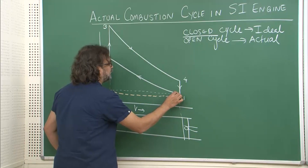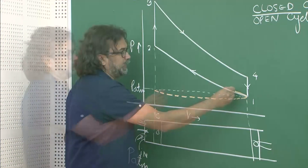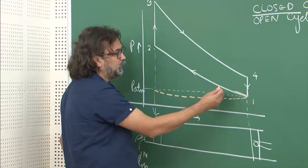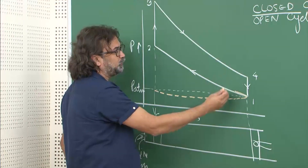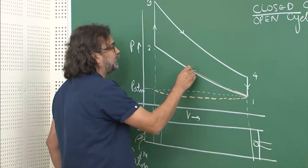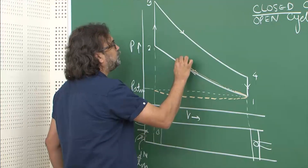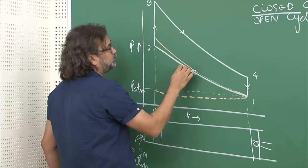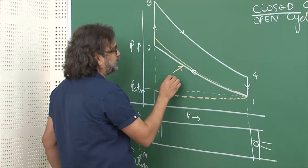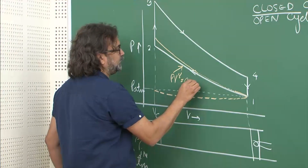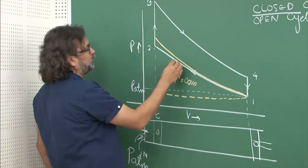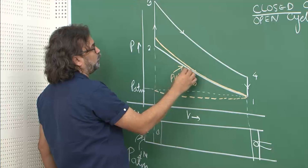From where the suction ends, the compression stroke begins. However, the engine is simultaneously heating up and being cooled by the cooling system, so there are heat transfer losses during compression. As a result, the real compression does not follow an adiabatic path (PV^γ = constant) exactly; the real path deviates somewhat and you may end up at a slightly different point at TDC.